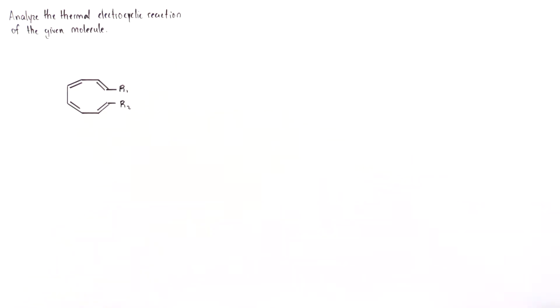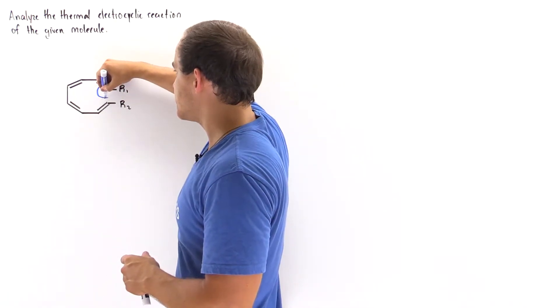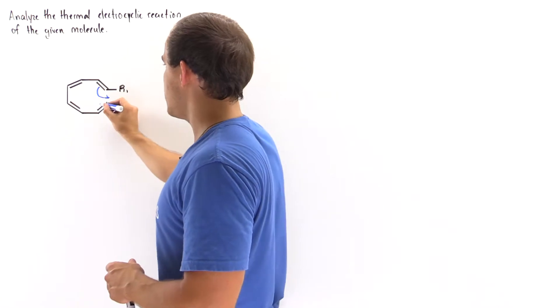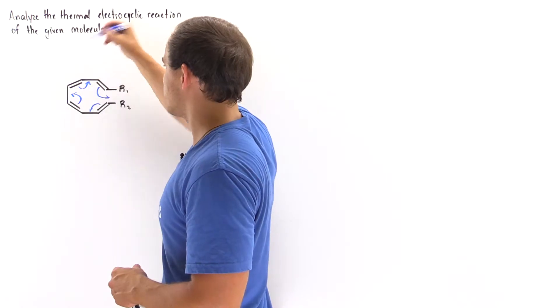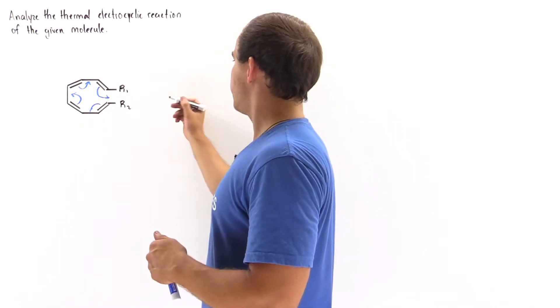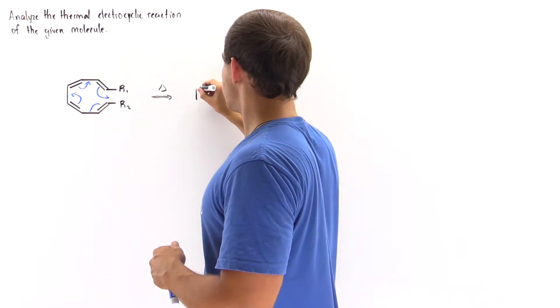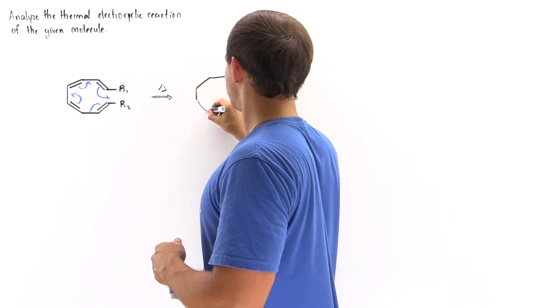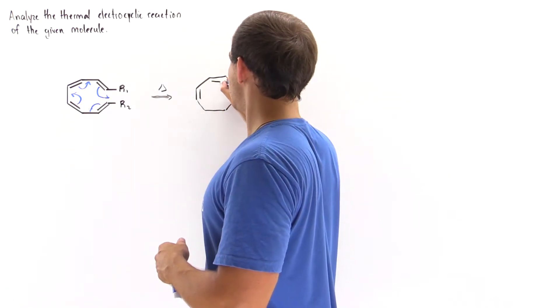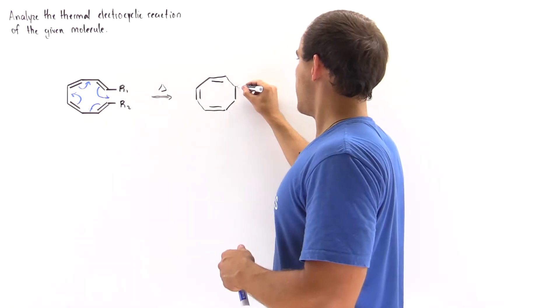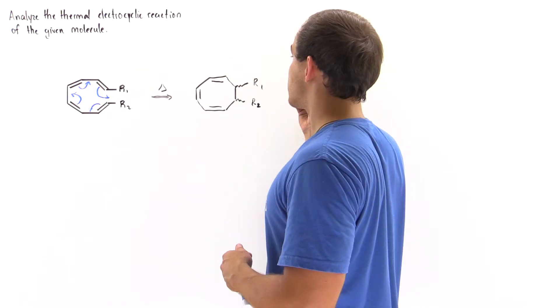Now the arrow formalism for the rearrangement is as follows. This breaks off and goes here, this breaks off and goes here, this forms a pi bond here, forms a pi bond here. The final molecule that we form under temperature conditions has bonds and a pi bond, and we don't know in which direction these R groups point. That's what we want to determine.